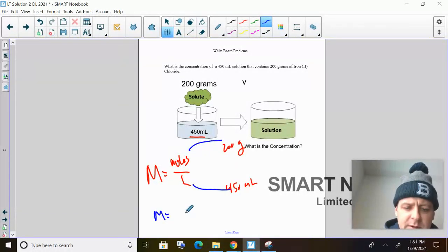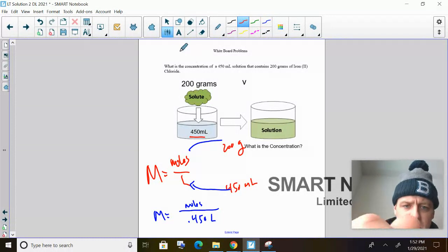So first things we can do is we can say, I'm going to divide by 1,000 to get to liters. So it's going to be 0.450 liters. And then how many moles will it be? Well, let's figure it out.